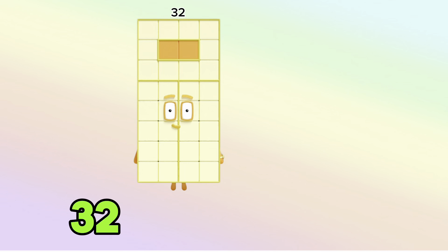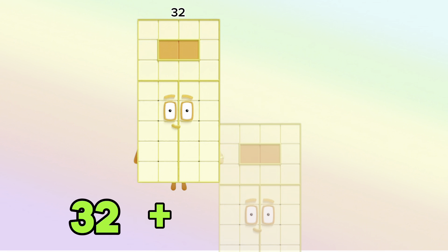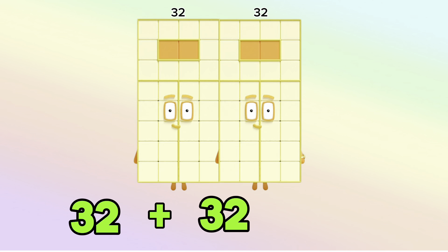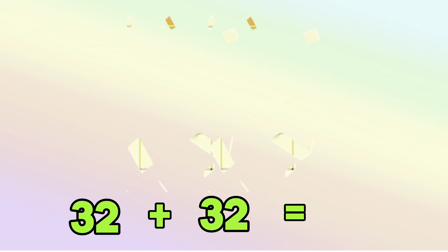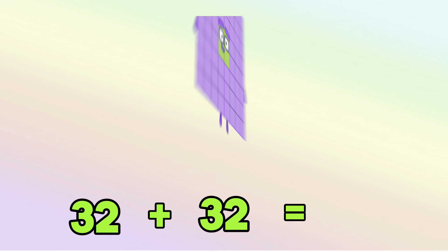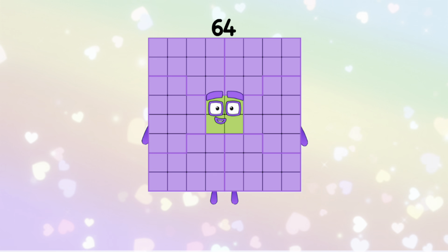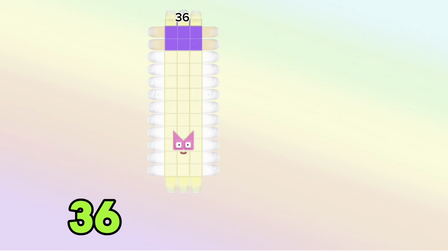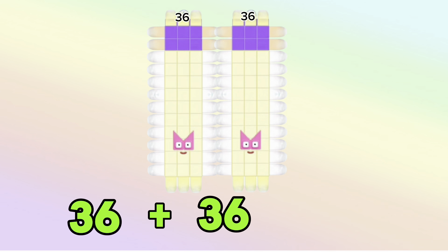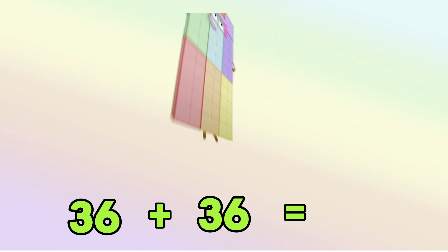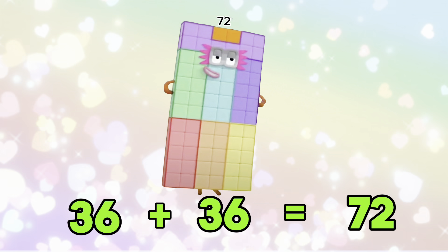32 add 32 is equals to 64. 36 add 36 is equals to 72.